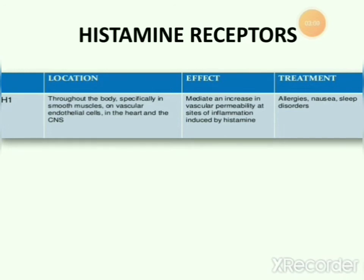H1 receptors are located throughout the body, specifically in smooth muscles, vascular endothelial cells, the heart, and the CNS. Their activation mediates an increase in vascular permeability at sites of inflammation induced by histamine. H1 receptors are targeted for the treatment of allergies, nausea, and sleep disorders.